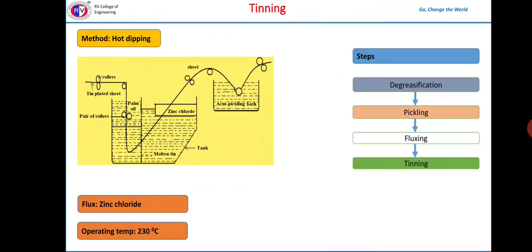These are the common steps involved in the tinning process. First, degreacification followed by pickling. During tinning, the object is first cleaned and the cleaned object is passed through a molten zinc chloride flux, molten tin, and then through palm oil. Zinc chloride flux helps in better adhesion of coating and palm oil prevents the oxidation of hot tin coating by air. A pair of rollers inside the palm oil tank helps in removing the excess of tin and producing a coating of uniform thickness.